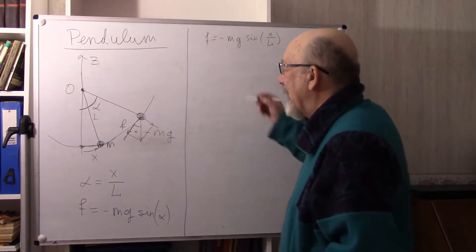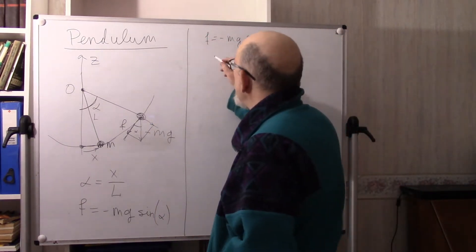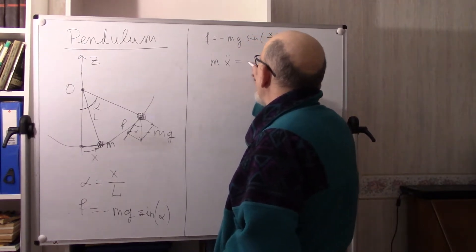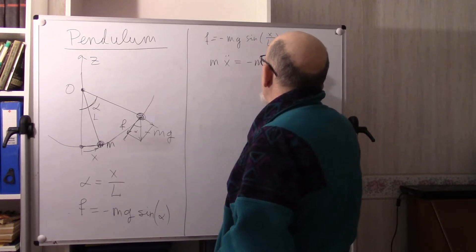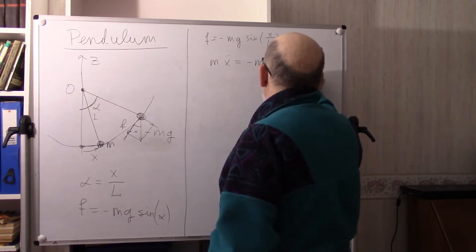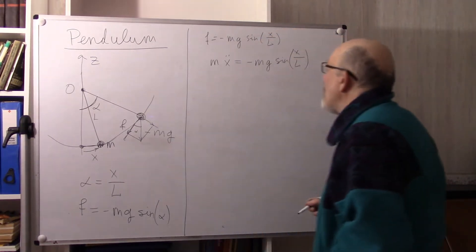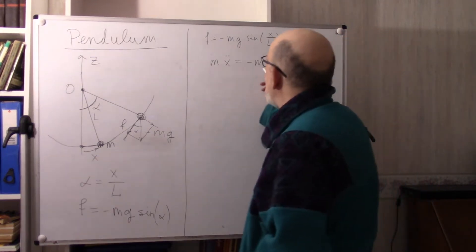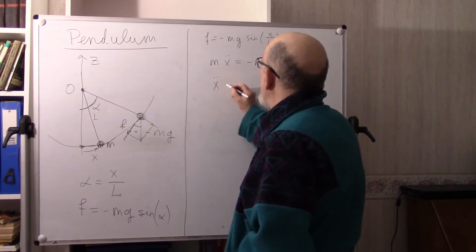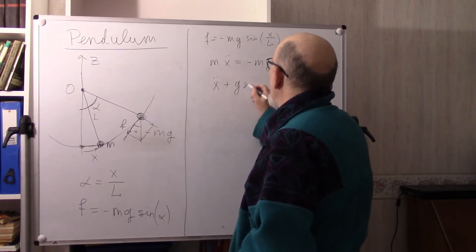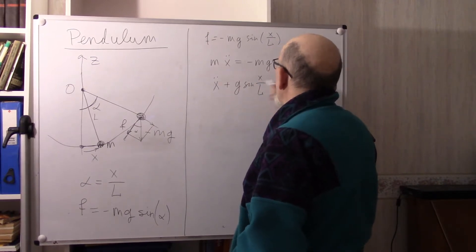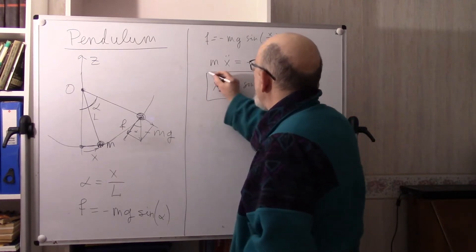As a result, we have m times X double-dot equals minus mg sine of X divided by L. Dividing by m and rearranging, we get X double-dot plus g sine(X/L) equals 0. This is the equation of the pendulum.